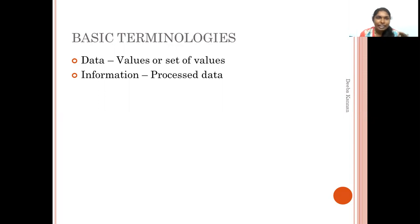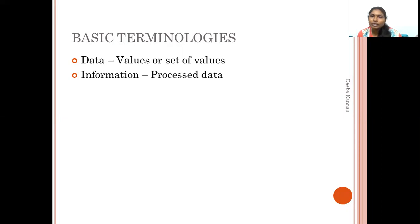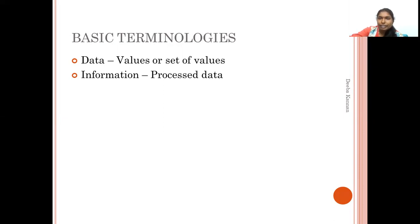Now, information. Let's see the difference. Information is processed data — it has a meaning. Data is raw. For example, data could be: pen, pencil, slate, eraser. That is raw data. Information is a meaningful thing derived from that data.